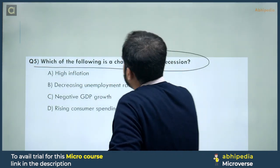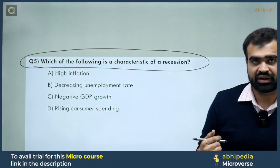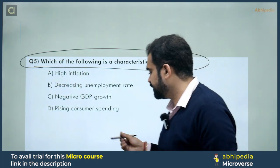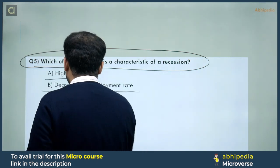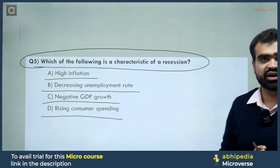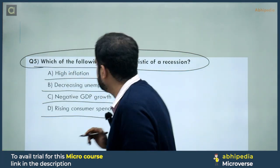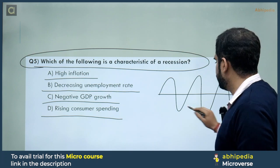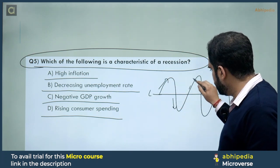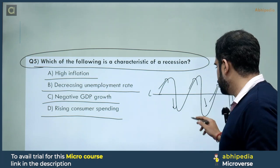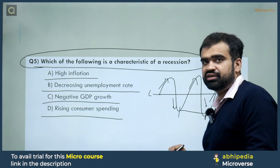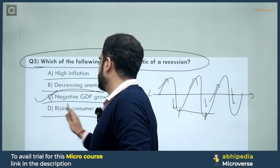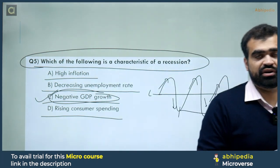Next question: which of the following is a characteristic of a recession? Options: A) High inflation, B) Decreasing unemployment rate, C) Negative GDP growth, D) Rising consumer spending. Technically, a recession occurs in the business cycle when two consecutive periods of decline happen. According to the options, the correct answer is option C — negative GDP growth rate. This is called 'mandi' or economic slowdown in Hindi.